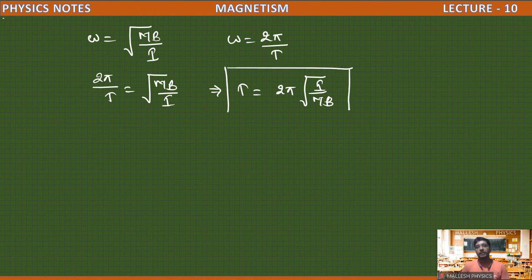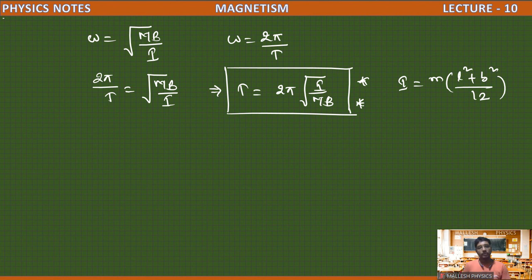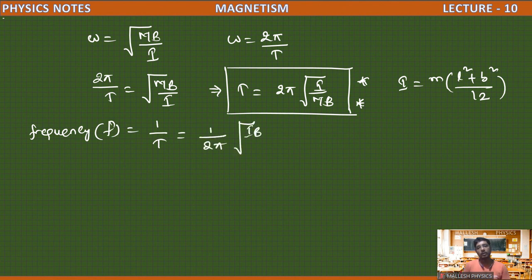This is the formula for the time period of the bar magnet when it is suspended inside the uniform magnetic field. The moment of inertia of the bar magnet can be written as m times (l squared plus b squared) divided by 12. The frequency is 1 over T, which equals (1 over 2 pi) times the square root of MB over I.